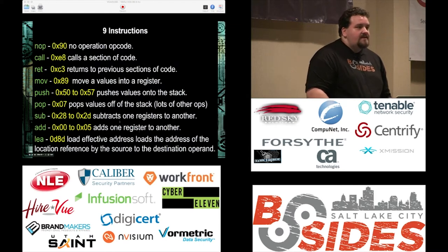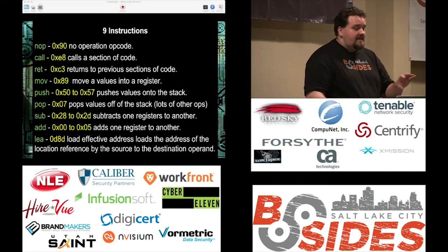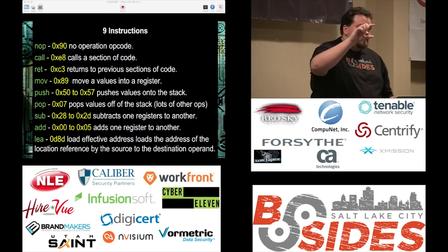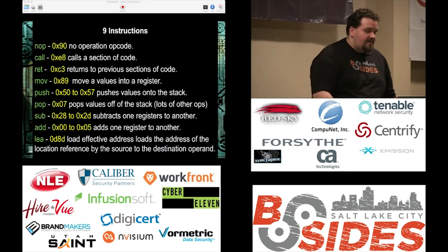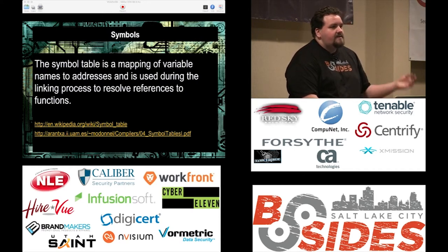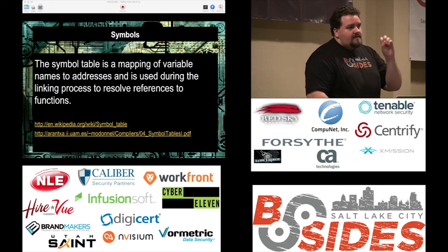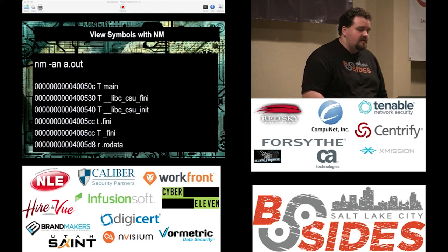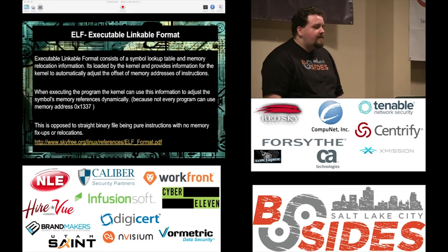I've included the operation codes here because they're important. When you're actually modifying a binary, you won't see NOP — you'll see 0x90 in hex. When modifying a binary, you look at your disassembly, look at the hex, and figure out which section correlates to which instruction set, then go in and make changes. Symbols are basically a mapping of addresses used during the linking process to resolve references to functions — the linker uses them to say 'when you said test, it's actually at this memory address.' You can view symbols with NM, which comes installed with GCC and other Linux tools.